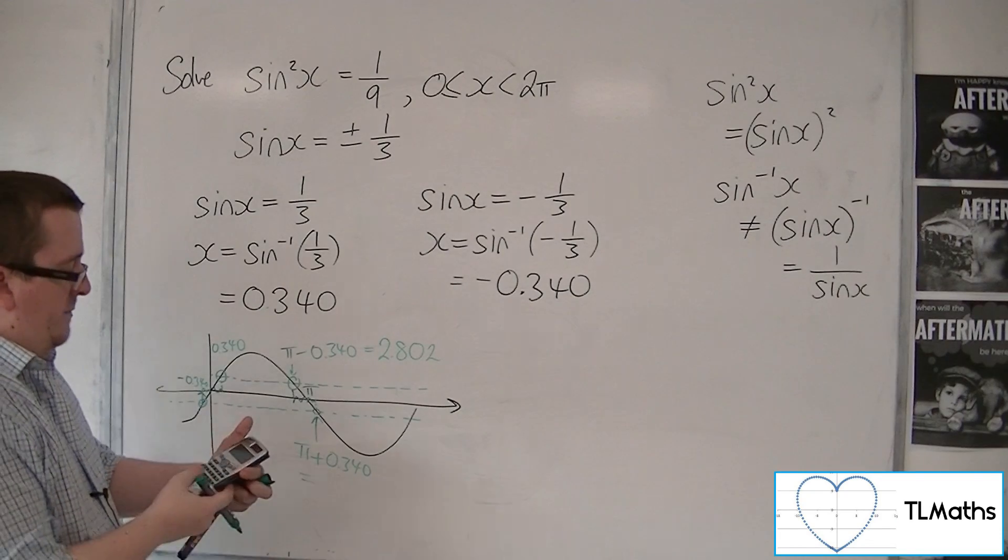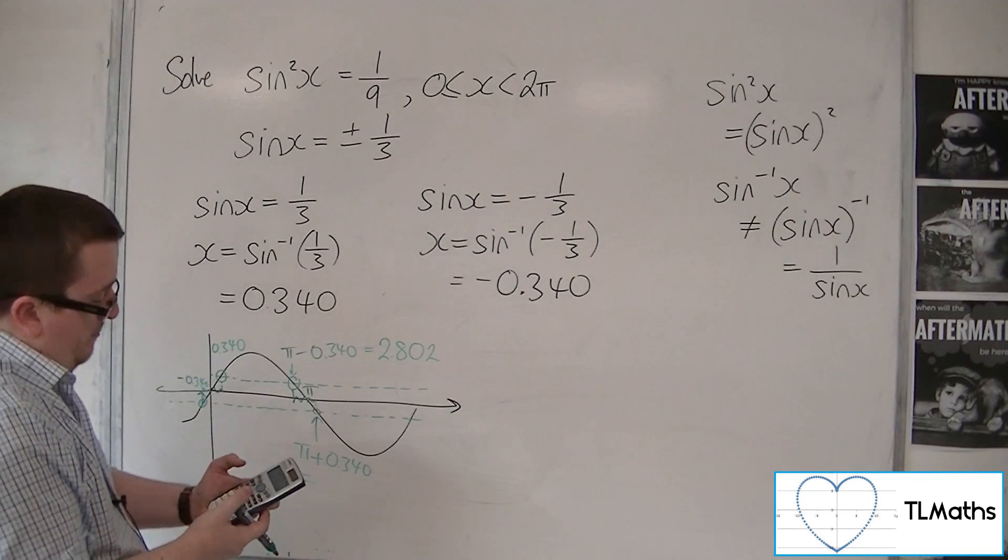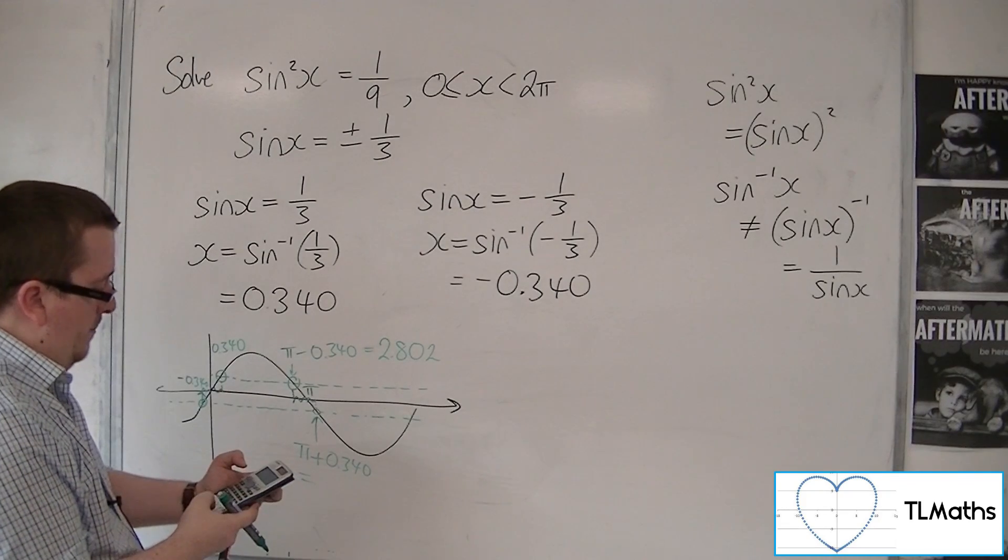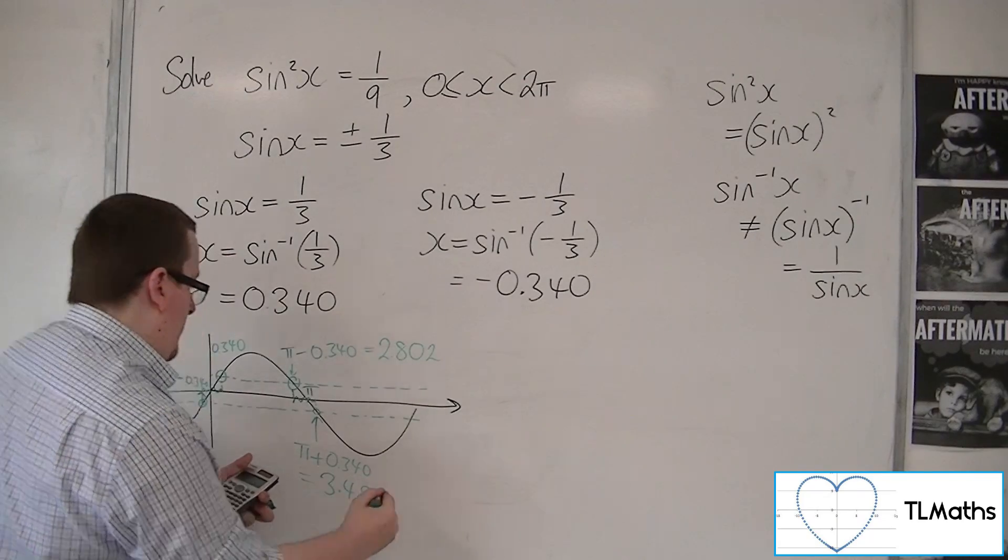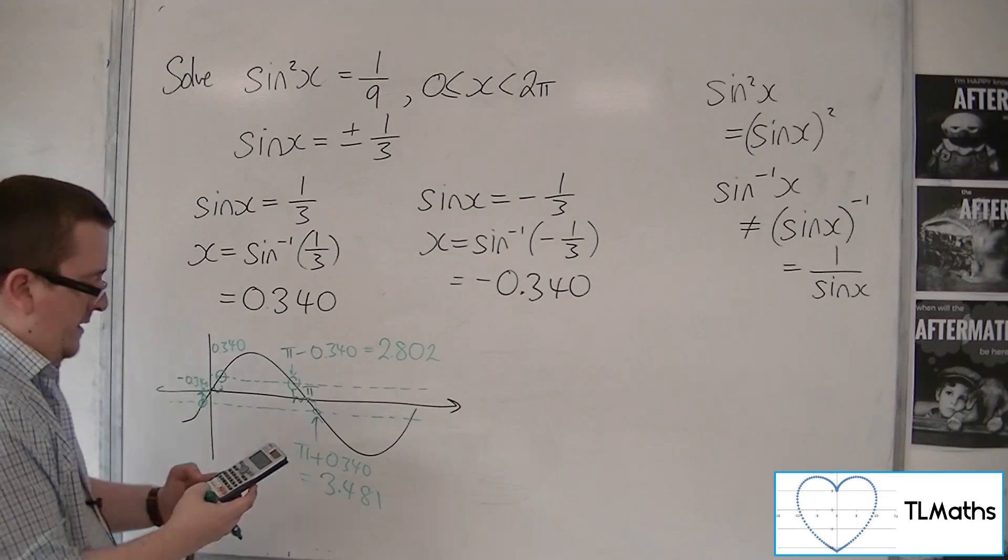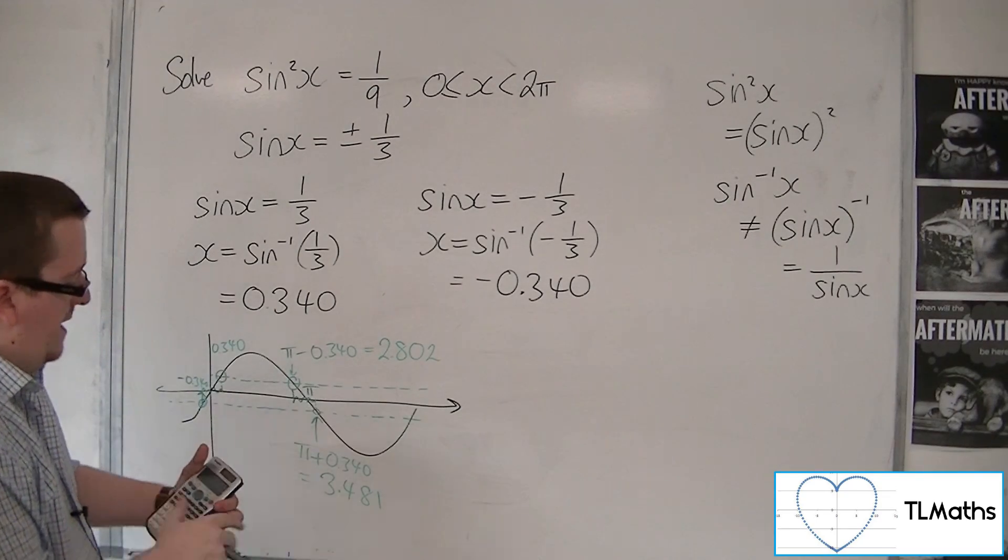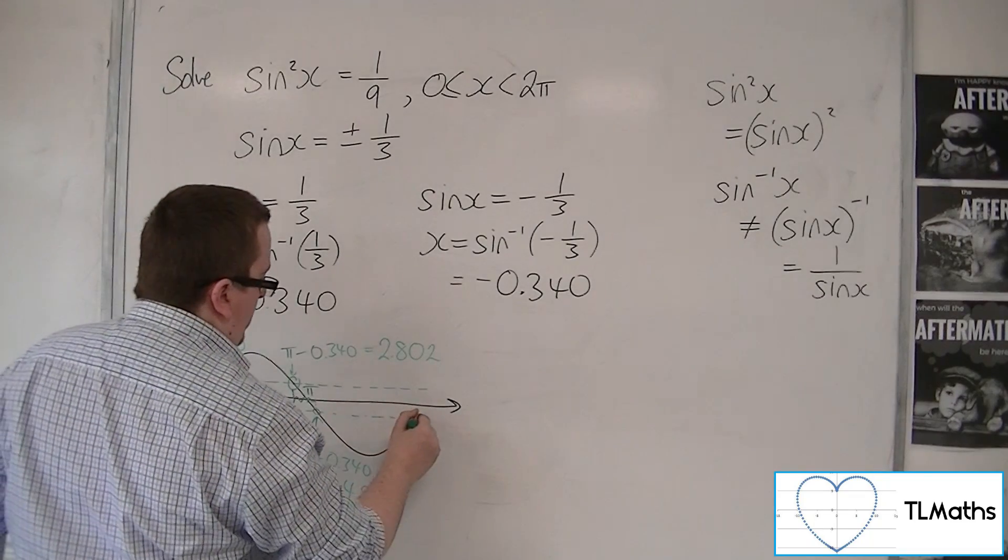So I'm going to times this answer by minus 1 to make it positive. Then π plus answer is 3.481. Now for the purposes of what I need, I'm going to subtract π to get back to my 0.340. This is my other solution.